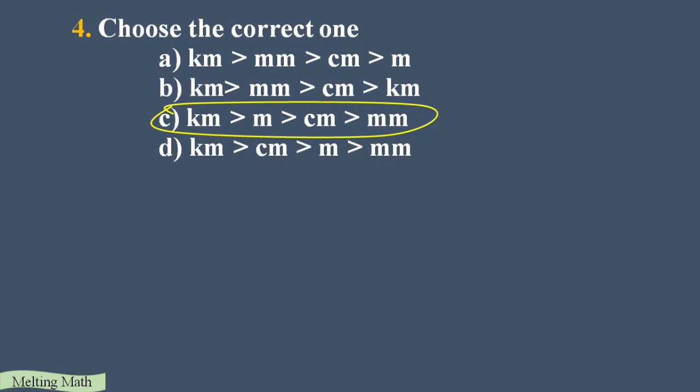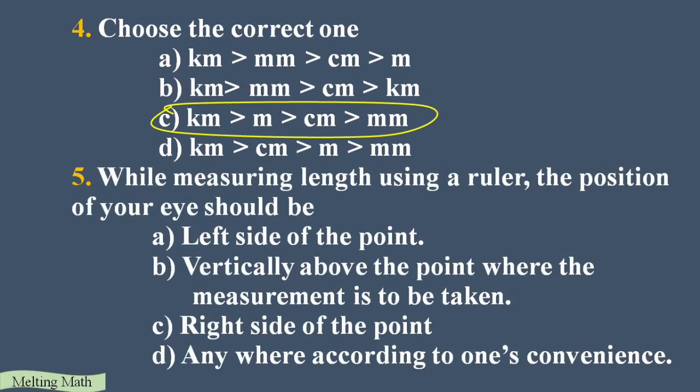The correct order is: after kilometer comes meter. One kilometer equals thousand meters, one meter equals hundred centimeters, one centimeter equals ten millimeters. So the correct descending order is kilometer, meter, centimeter, millimeter. Option C is the correct answer.